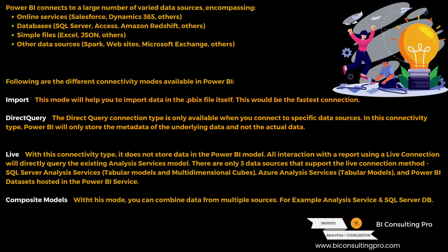The second connectivity mode is Direct Query. The Direct Query connection type is only available when you connect to specific data sources — only certain data sources are supported. In this connectivity type, Power BI will only store the metadata of the underlying data and not the actual data. Next is the Live Connection. With this type, it does not store data in the Power BI model — all interactions with the report will directly query the existing Analysis Services model, such as SQL Server Analysis Services or Azure Analysis Services.